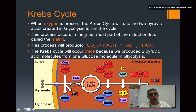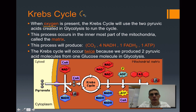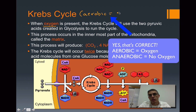The second process we need to look at is the Krebs cycle. The Krebs cycle is only going to occur if there is oxygen present, so this is considered an aerobic type of process. If O2 is present, the Krebs cycle can occur.